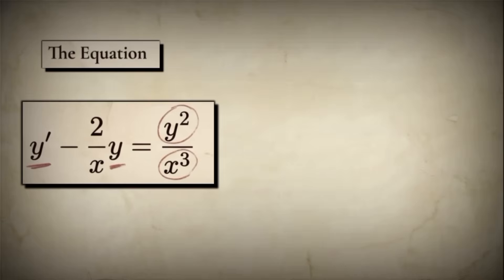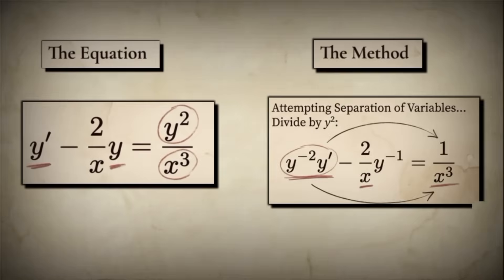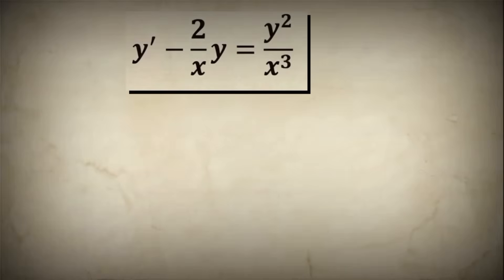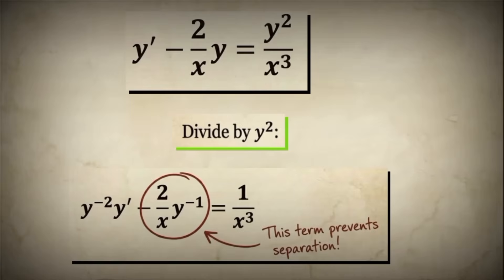Why was this so difficult? What made it different from the equations that could be solved with separation of variables? The old method fails. Bernoulli's first instinct was to use the method he had learned from Leibniz — separation of variables — after all, this method had just proven so powerful in solving many equations. He tried to isolate the x terms by dividing the entire equation by y², starting with y' minus 2/x times y equals y² over x³, dividing every term by y². But it was no use — an x term remained stubbornly on the left side, and moving it just brought a y term to the right. The variables refused to separate.